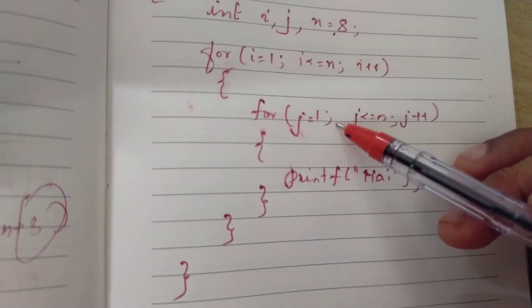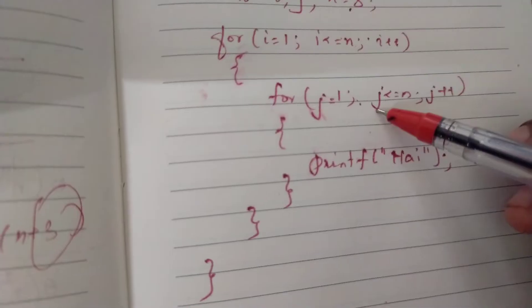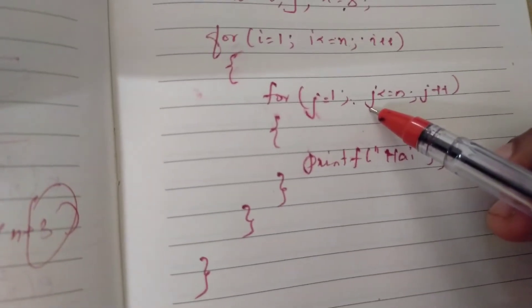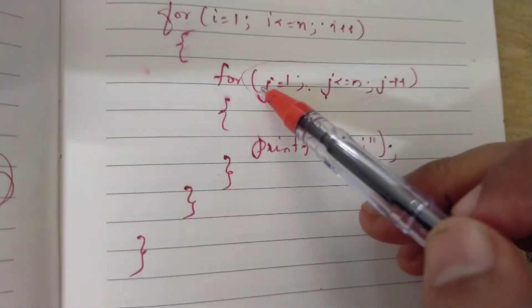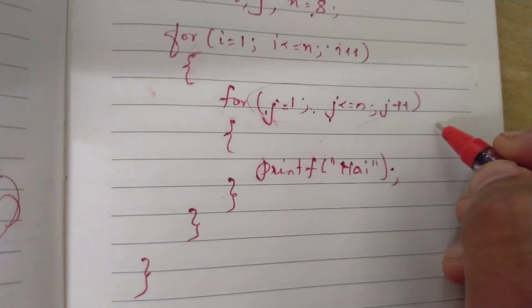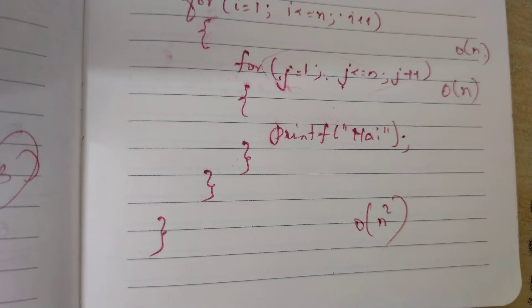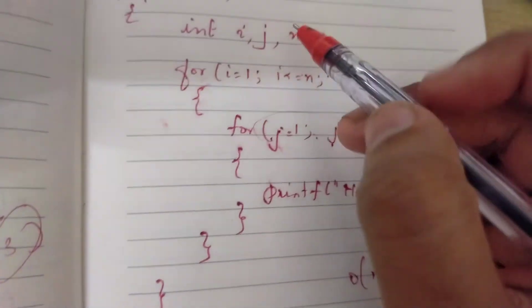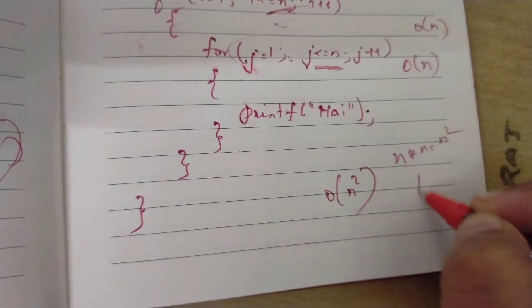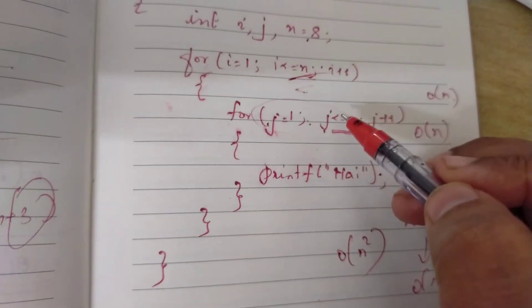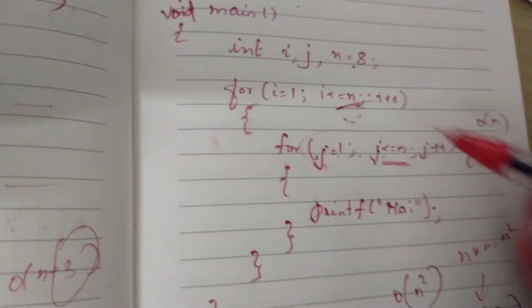Now we have two for loops — a nested for loop where the inner for loop is inside the outer for loop. Here we calculate the time complexity. Order of n for the outer loop and order of n for the inner loop — n times n is n squared. So the order of time complexity is order of n squared. The loop variables are incremented by a constant, giving order of n each, and the total time complexity of this code is order of n squared.